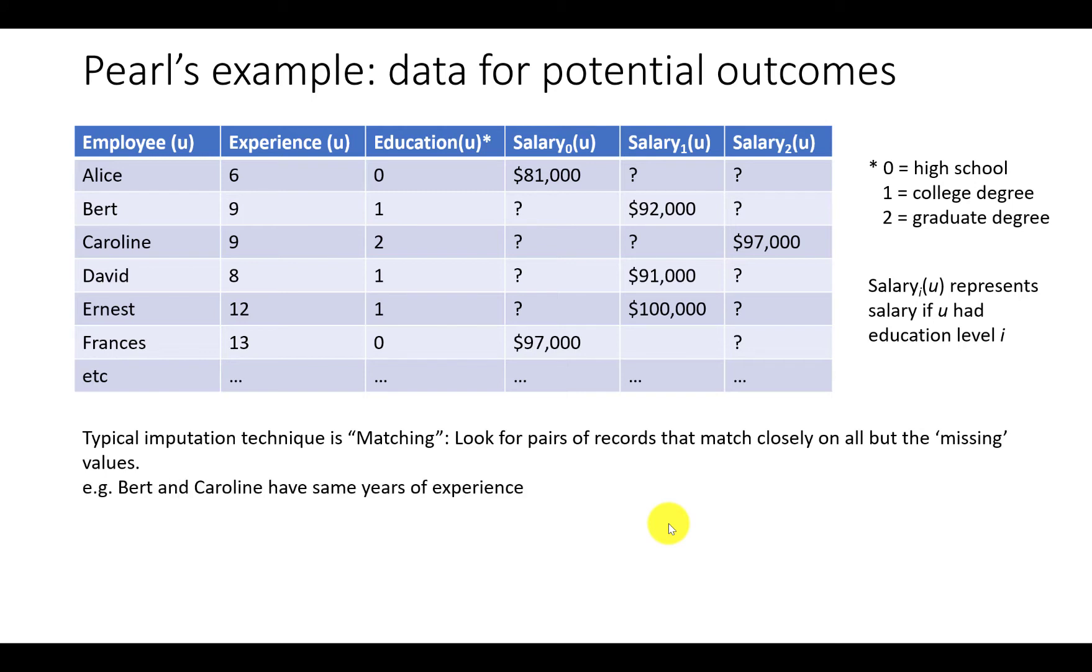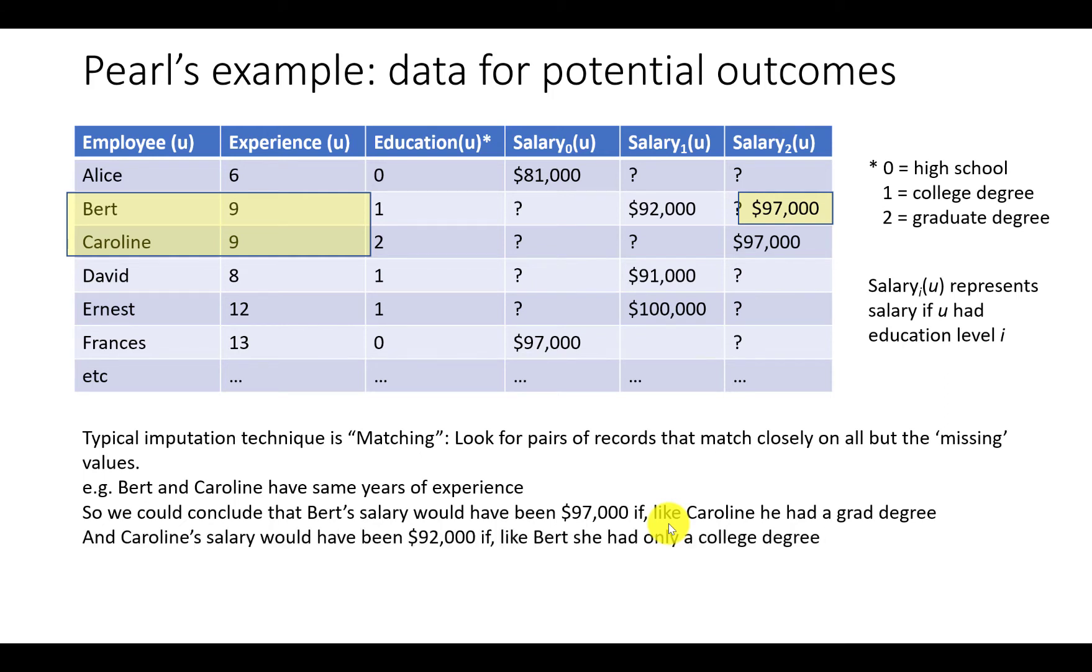For example, Bert and Caroline have the same years of experience. So we could conclude that Bert's salary would have been $97,000 if, like Caroline, he had a grad degree. And Caroline's salary would have been $92,000 if, like Bert, she had only a college degree.